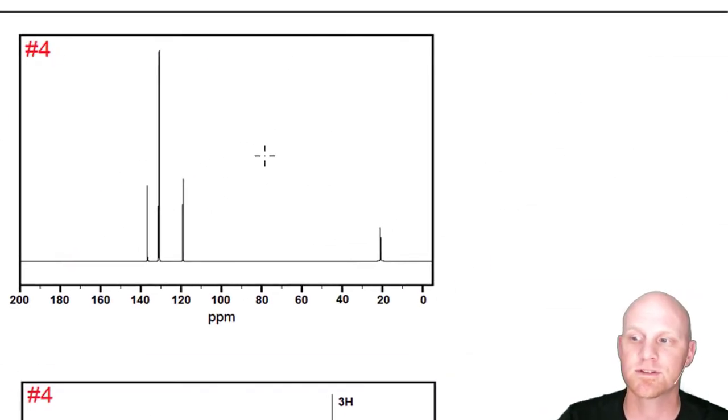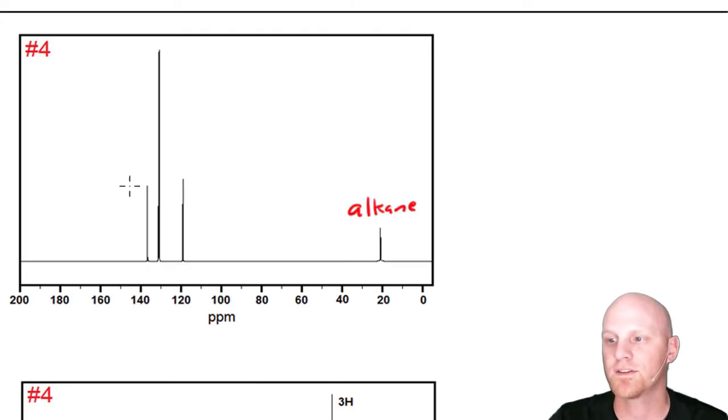Let's take a look at that carbon-13 spectrum now. We're not going to spend too much time here, but we've got 4 signals. We've got an alkane signal down here, and these are all in the 110 to 160 range, most likely aromatic signals. This confirms what we speculated on the IR—that peak was indeed an aromatic carbon-carbon peak.